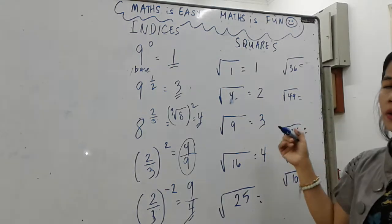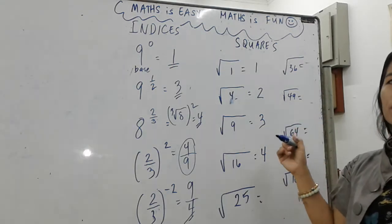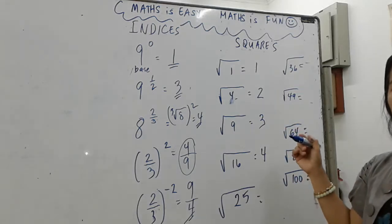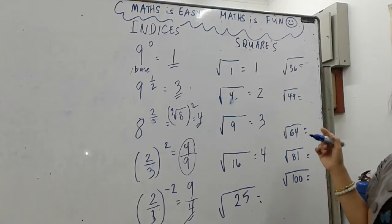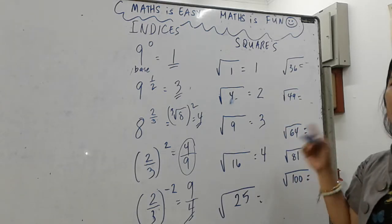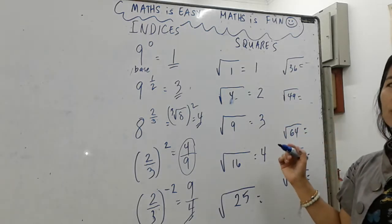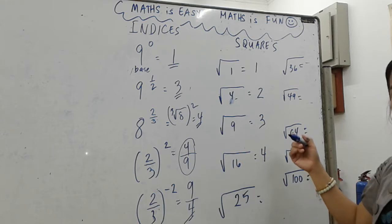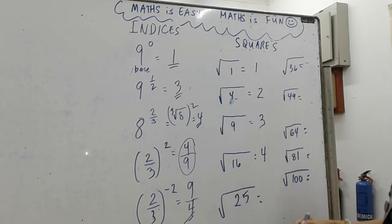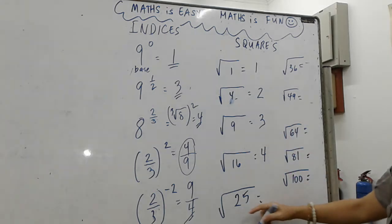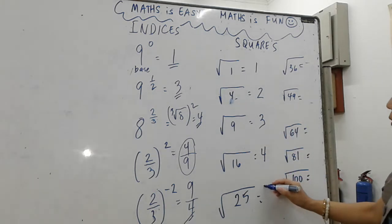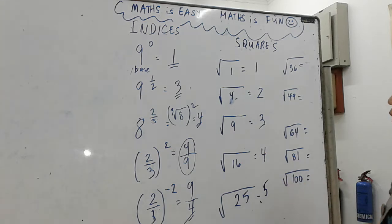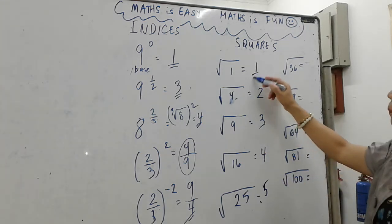When we are looking for the square root of a square number, we just find the number which when multiplied by itself gives you the original number. So the square root of twenty-five is five because five times five is twenty-five.